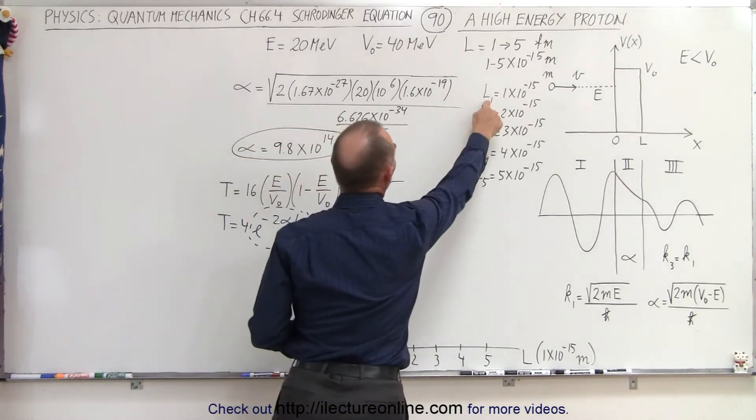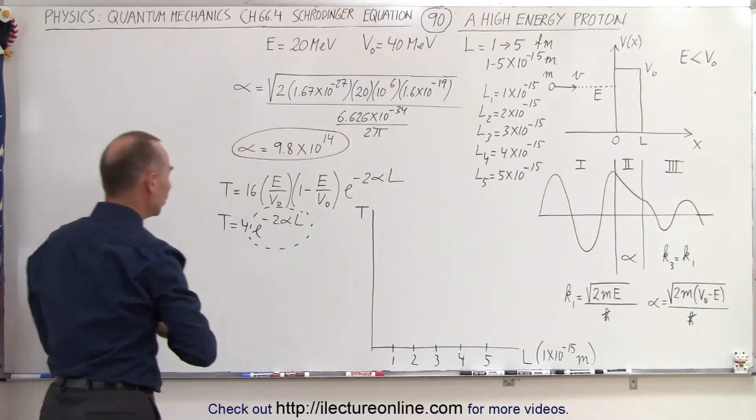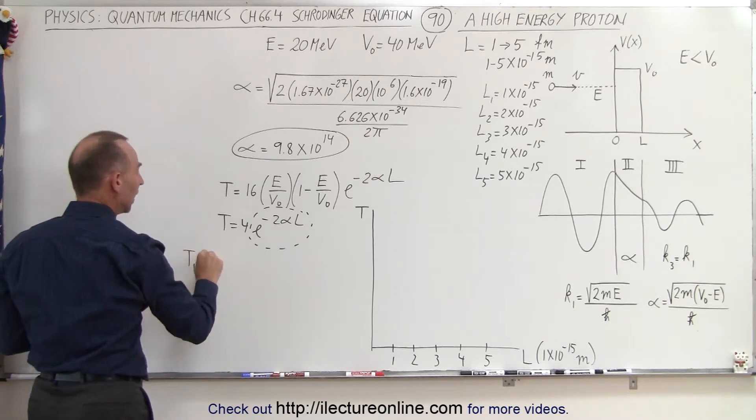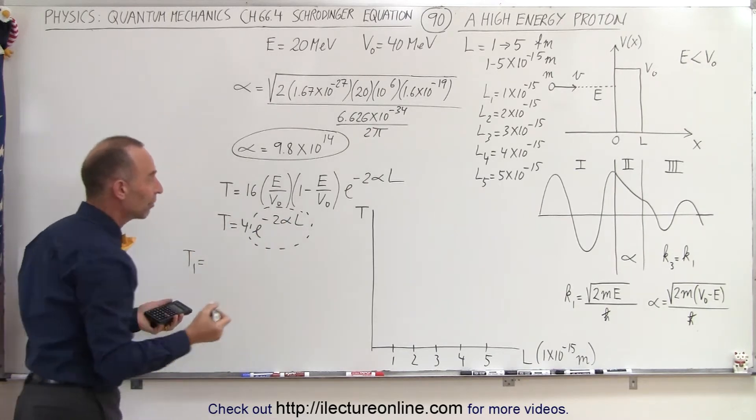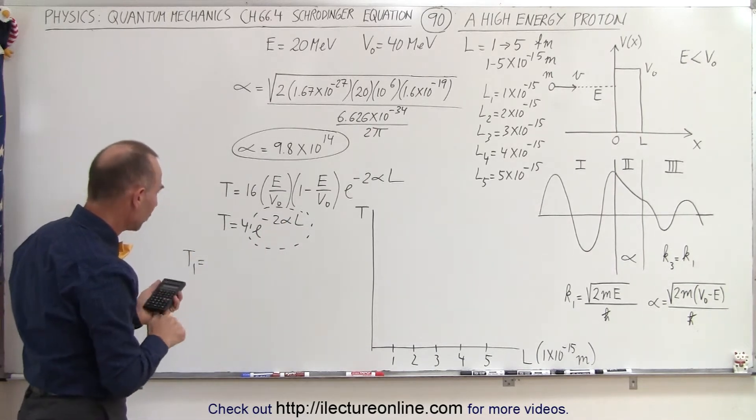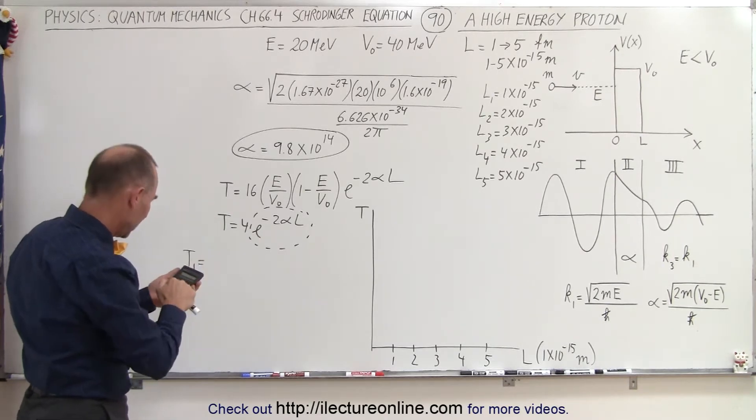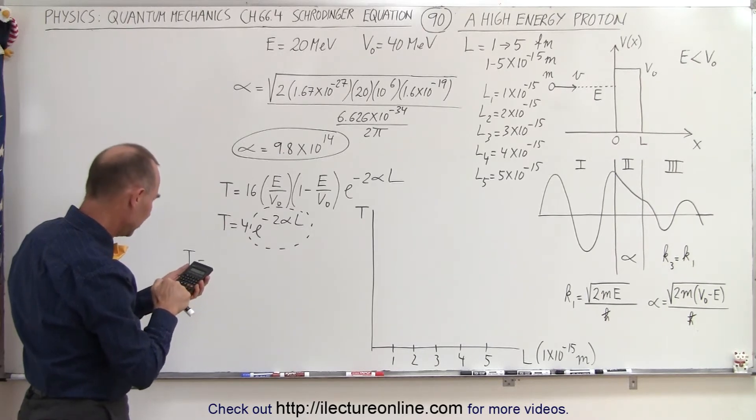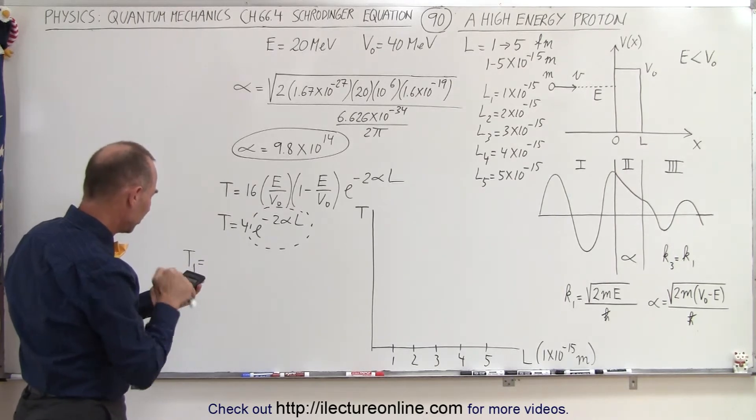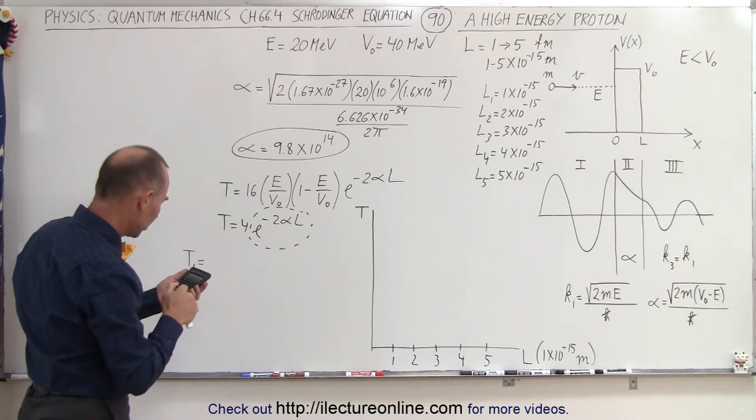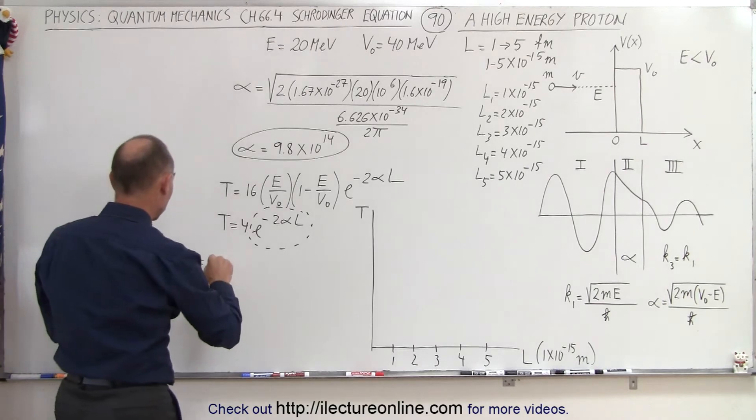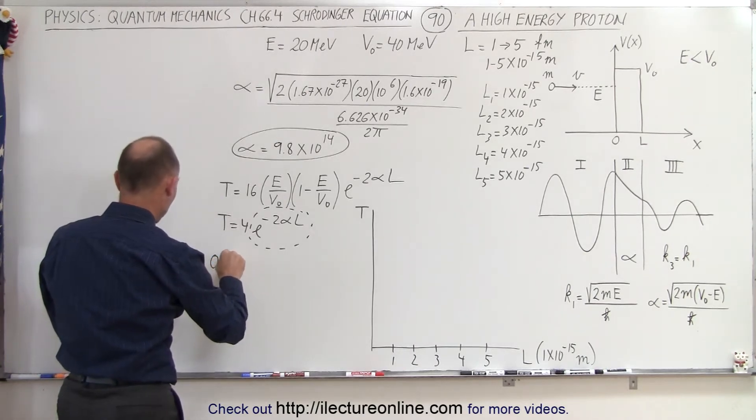So starting with L1, let's call that T1. When L1 is equal to 1 times 10 to the minus 15 meters, we end up with, the alpha is 9.8 e to the 14th times 1 e to the 15th minus times 2. And then we put a negative from that, take the exponent of that, and then we multiply that times 4. So times 4, and we have a pretty good probability there. It is 0.56.